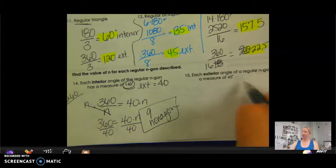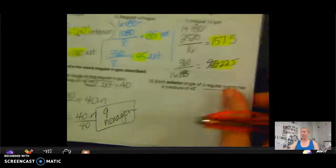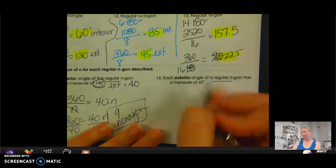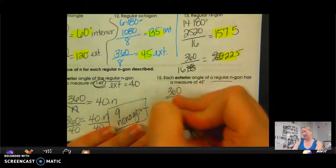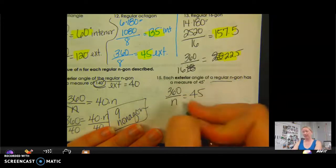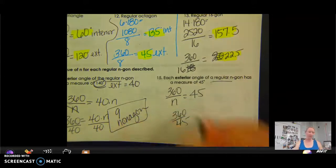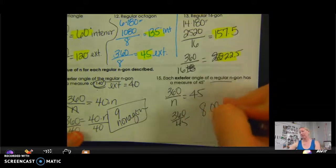Each exterior angle of a regular n-gon has a measure of 45 degrees — remember, this only works with regular polygons. So 360 over n equals 45; multiply by n, divide by 45. So 360 divided by 45 is 8. It's an octagon.